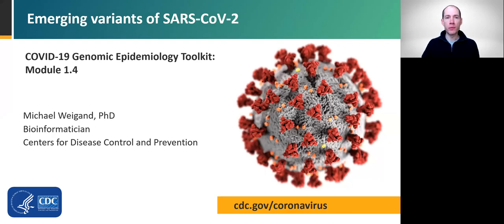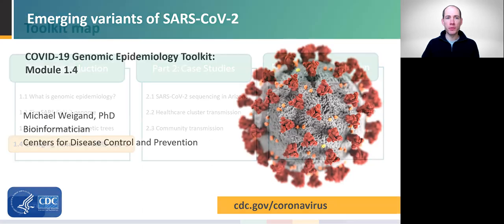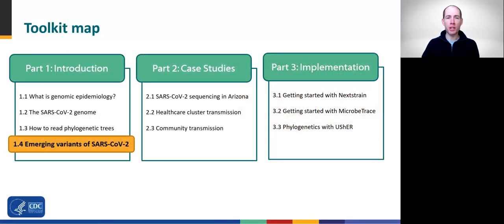Welcome to Module 1.4, Emerging Variants of SARS-CoV-2. This presentation is part of the COVID-19 Genomic Epidemiology Toolkit from CDC's Office of Advanced Molecular Detection. My name is Dr. Michael Wiegand, and I am a bioinformatician with the CDC. This module is part of our Introduction to Genomic Epidemiology and the Genome of SARS-CoV-2. Be sure to check out the toolkit's other modules, which include a combination of training materials and case studies to help you get started supplementing epidemiology with genome sequence data.